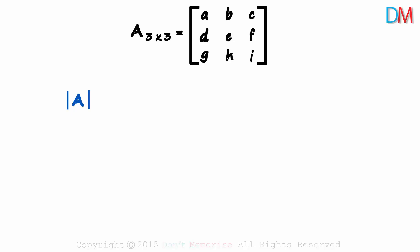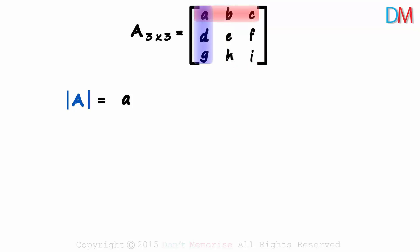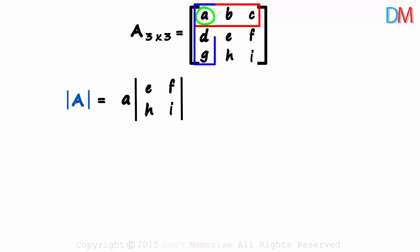We find the determinant keeping the first row as the reference. The first element is A, and it will be multiplied with something. Element A is the 1,1th element — first row, first column. It will be multiplied with the determinant of whatever remains after excluding the first row and the first column. Those four remaining elements are E, F, H, I. And we know how to find the determinant of a 2 by 2 matrix.